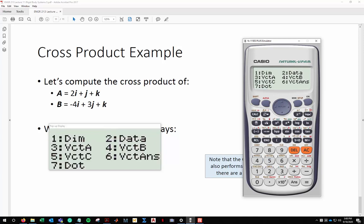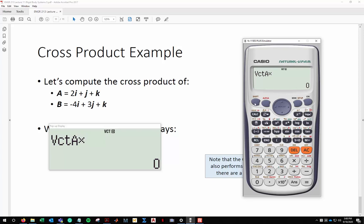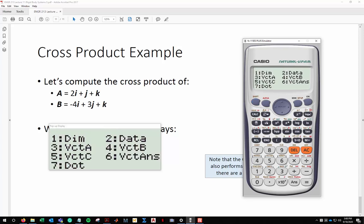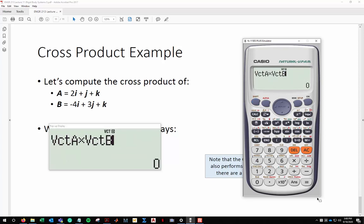Shift, 5, 3, times shift, 5, 4, equals. And so that's negative 2. Press equals, or you can press the arrow key for negative 6 and 10. And that's what we got in class.